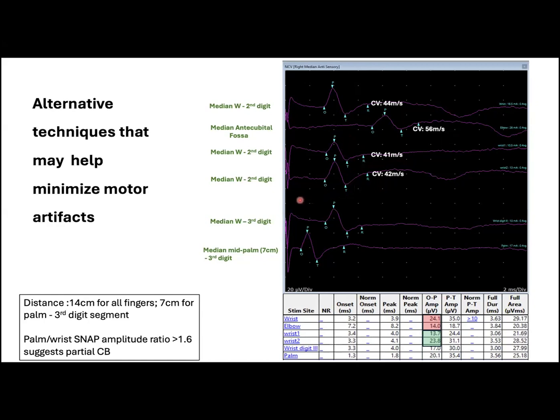In the last two tracings, we can see the comparison of two sides over the same median nerve, now recording from the third digit and stimulating at the wrist, then at the palm.